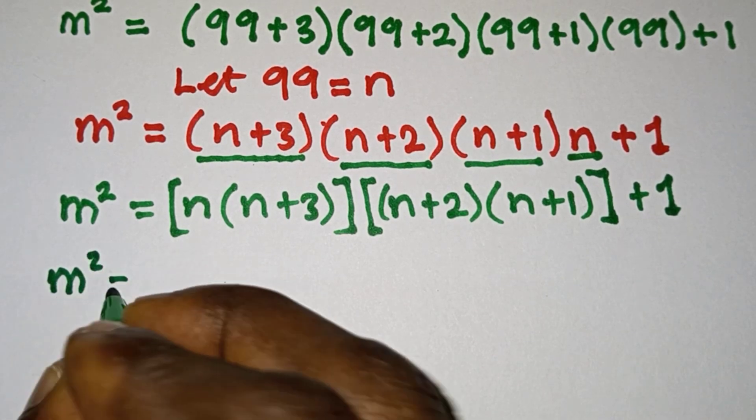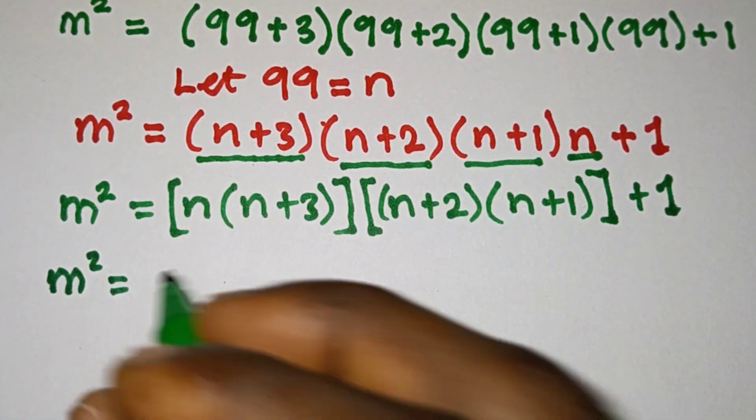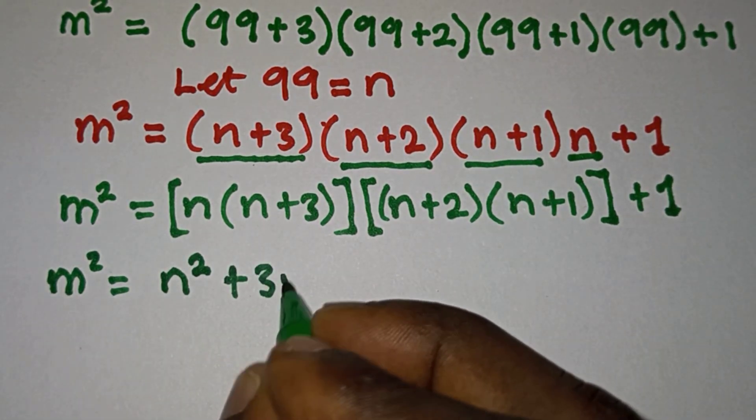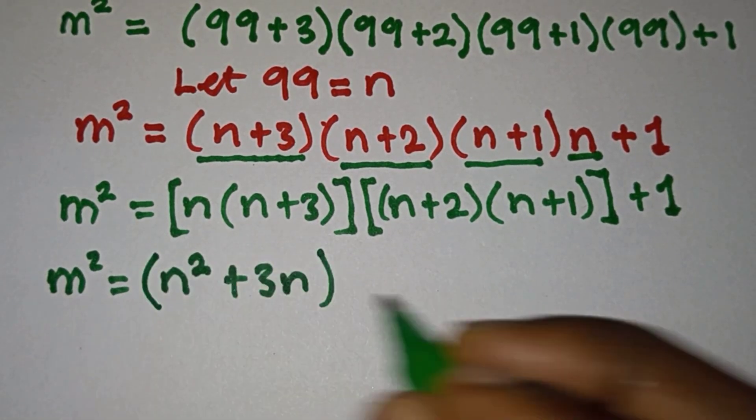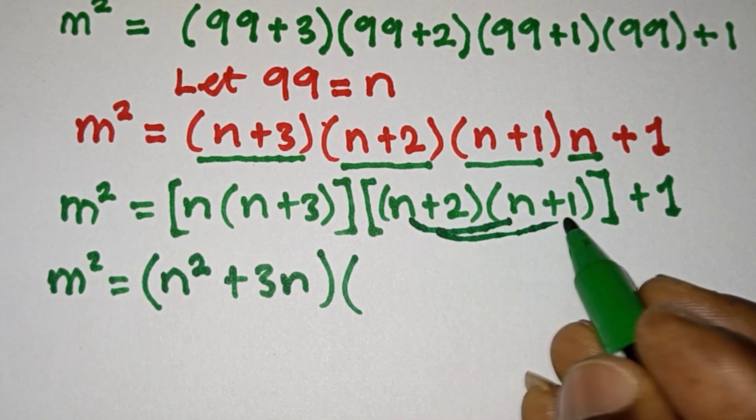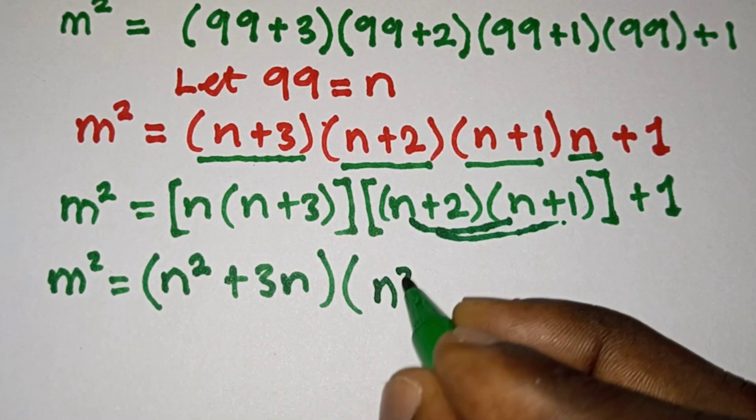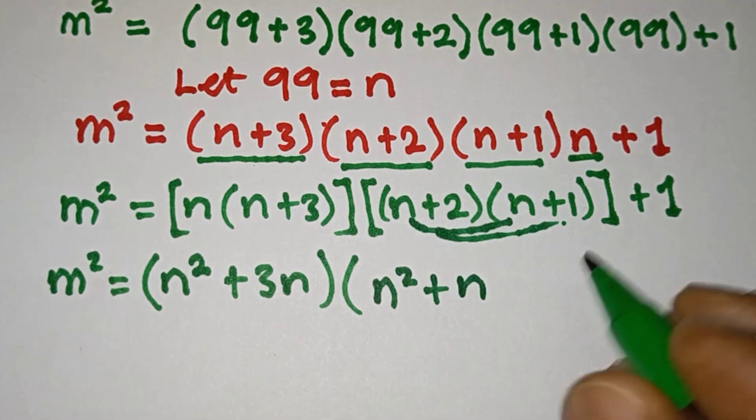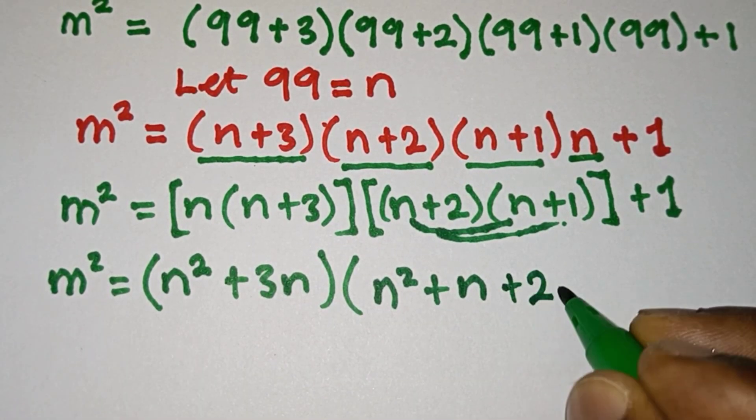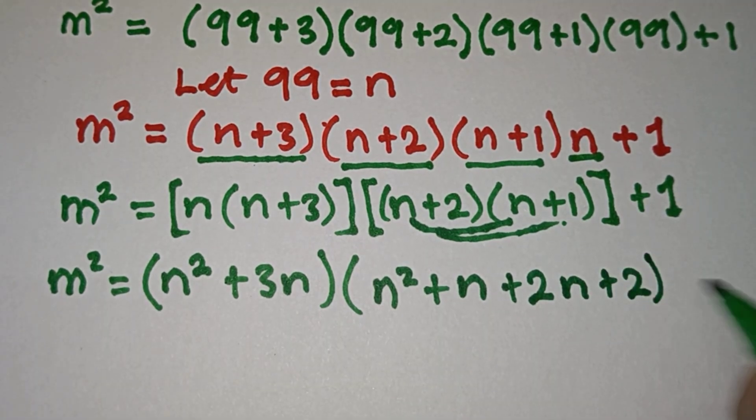We have m² equals, let's distribute this and we're going to have n² + 3n, then we will distribute this n over here so we're gonna have n² + n, then let's distribute this two so you have +2n + 2, then we have +1.